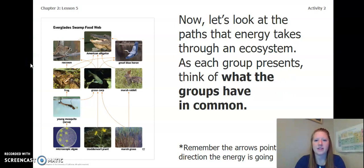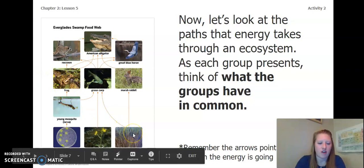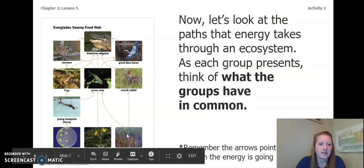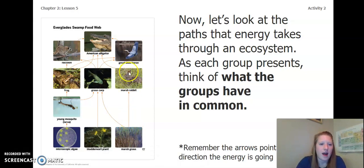Now let's look at the paths that energy takes through an ecosystem. As each group presents, think of what the groups have in common. So let's start at marsh grass. This is our plant. And remember, the arrows point to the direction the energy is going. So the energy from the marsh grass goes up to the rabbit. The energy from the marsh rabbit then goes into the American alligator.